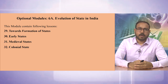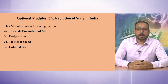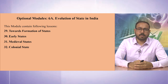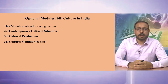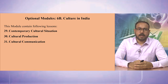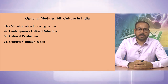The optional module contains two sections. Section one is on the evolution of state in India, providing an in-depth examination of the evolution of governance structures in India from ancient republics to modern democratic institutions. The second section is on culture in India, exploring the vibrant traditions, art forms, and societal norms that have shaped the Indian identity.